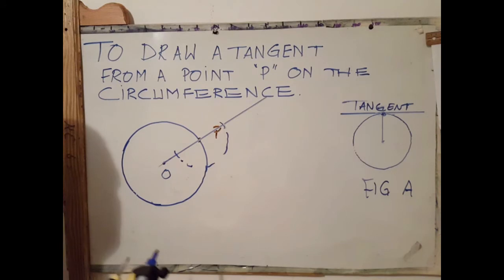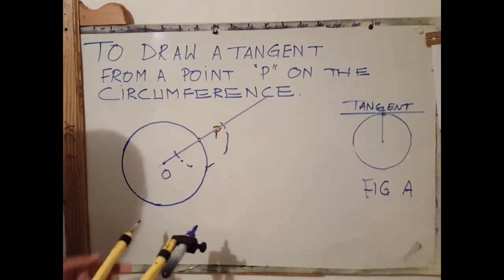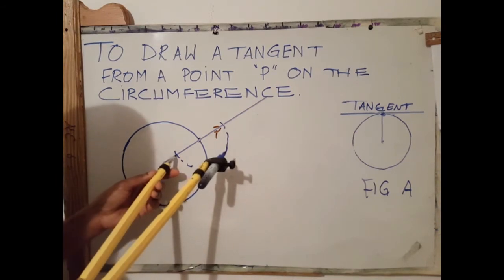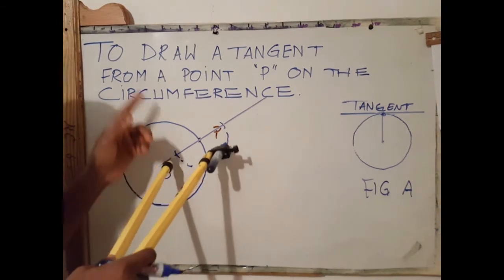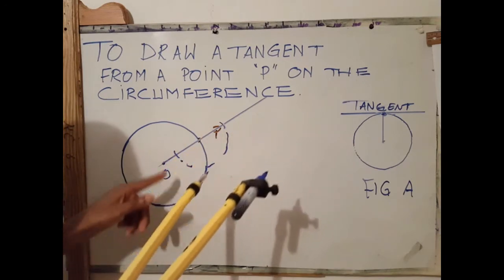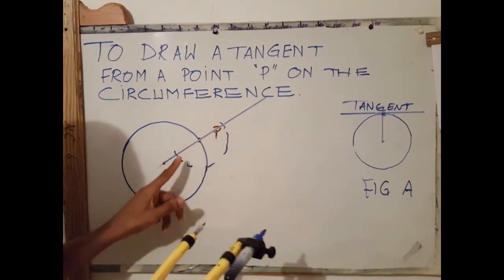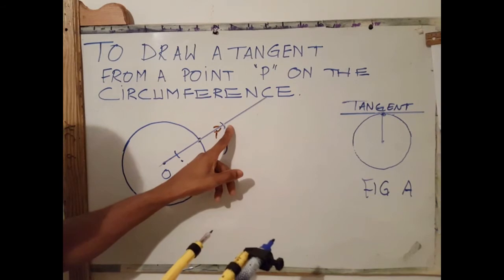The next step is to open my compass to a larger radius. Next, scrap an arc either above or below. So we are basically bisecting the distance between these two points, between this point and that point.